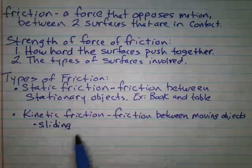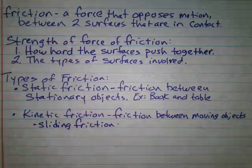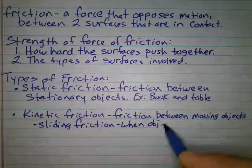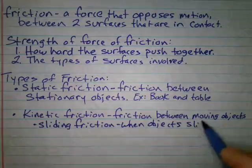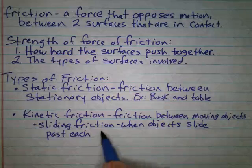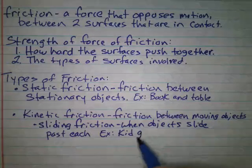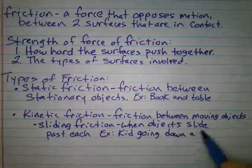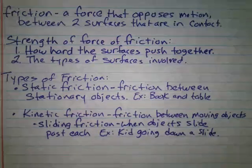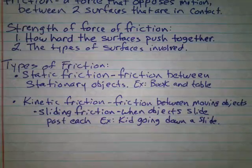First is sliding friction. Just like it sounds, this is when objects slide past each other. A good example, and one of my favorites, is a kid going down a slide. There's sliding friction - you're sitting on your behind and as you slide down that metal or plastic slide, the material in your pants is sliding against the material of the slide.